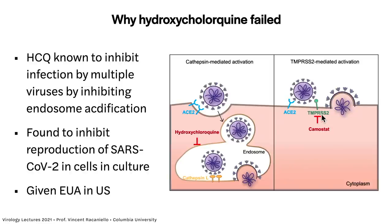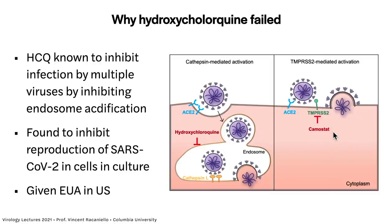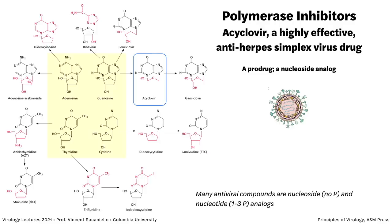In kidney cells, SARS-CoV-2 enters by endocytosis; hydroxychloroquine inhibits endosomal acidification and blocks cathepsin L cleavage of the spike needed for fusion. But lung cells have a second entry route — a cell surface protease called TMPRSS2 that cleaves the spike and allows fusion at the cell surface. This is not inhibited by hydroxychloroquine. So while it inhibits endosome acidification, the virus just enters at the cell surface instead. The moral: use the right cells. If they had used respiratory epithelial cells in the first paper, they would have found it didn't work.